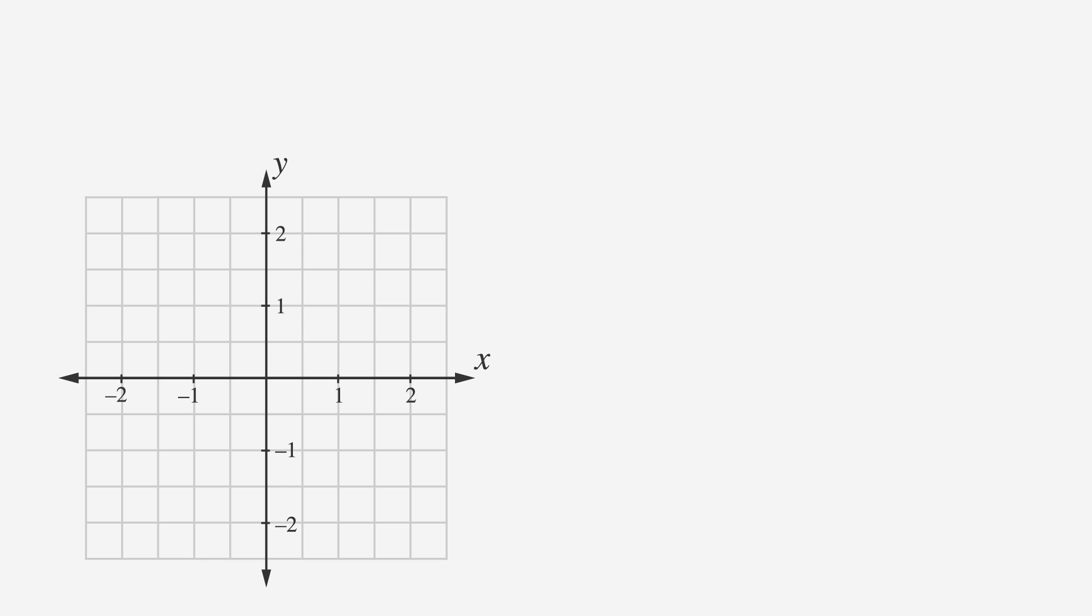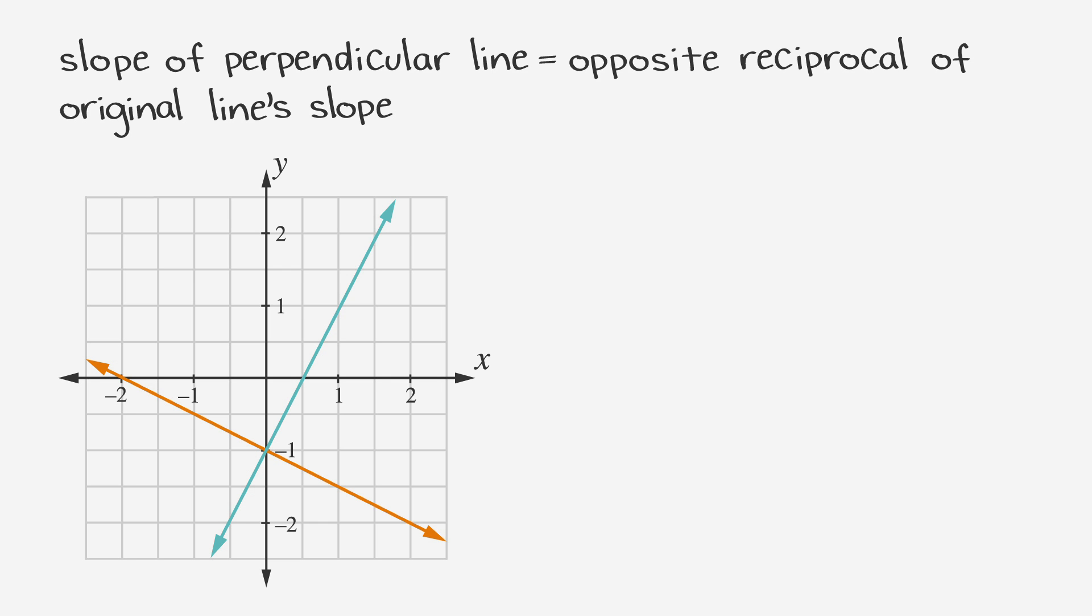If an SAT question asks you to find the equation of a perpendicular line, one that crosses our given line at a right angle, then the y-intercept doesn't matter, because the slope of a perpendicular line is the opposite reciprocal of the slope of the original line.